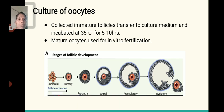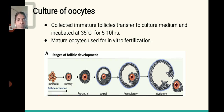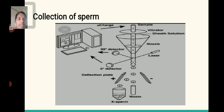Culture of oocytes: The collected immature follicles are transferred to culture medium and incubated at 35 degrees centigrade for 5 to 10 hours. The mature oocytes are then used in in vitro fertilization. The stages of follicle development are: follicle activation, primordial, primary, pre-antral, antral, pre-ovulatory, and ovulatory.